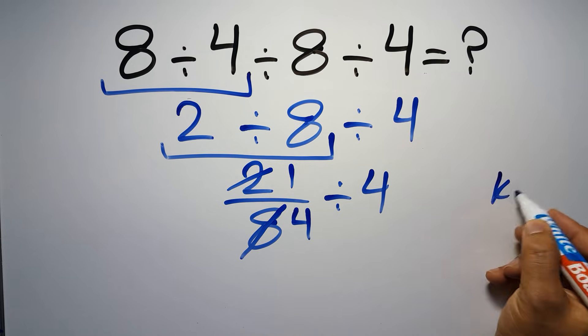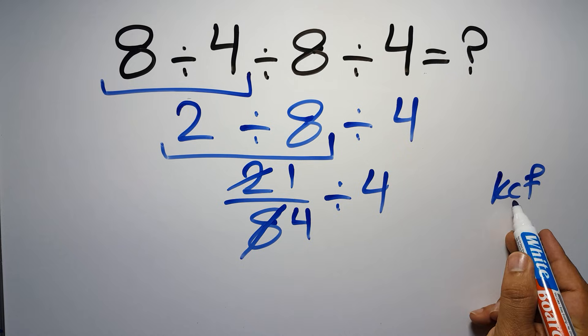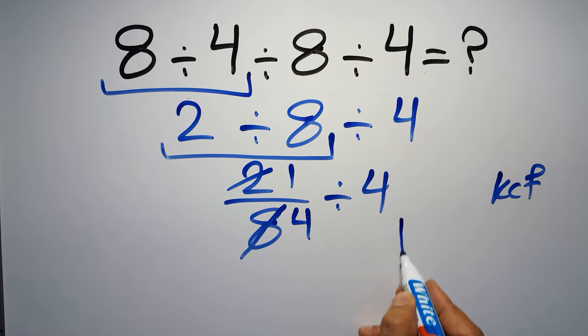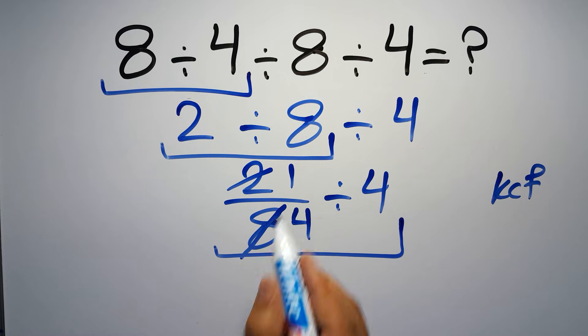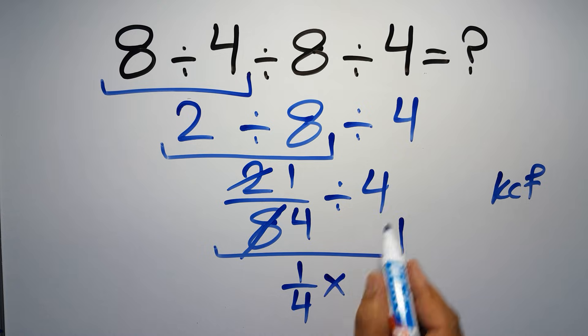according to the KCF rule, K stands for keep, C stands for change, and F stands for flip. We can write, keep the first fraction, change division to multiplication, and flip the second fraction